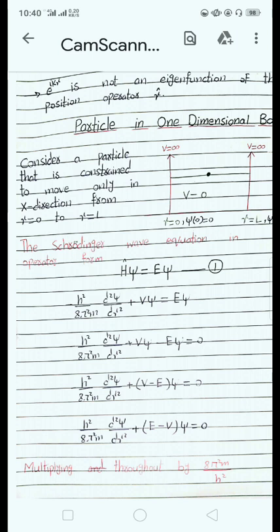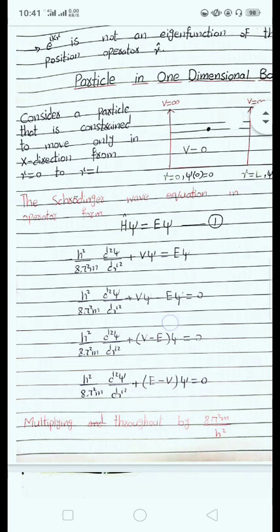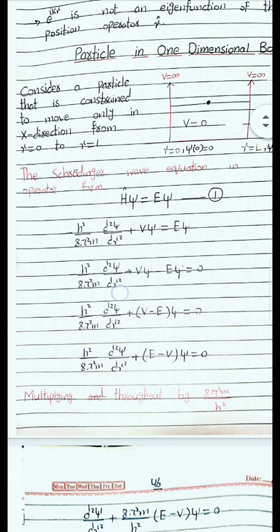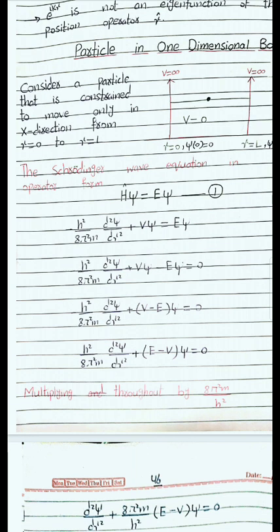Whenever we want to calculate the wave function, we need the Schrödinger wave equation, because it is the base of quantum mechanics. According to the Schrödinger wave equation, Ĥψ = Eψ. Substituting the Hamiltonian: −h²/(8π²m) · d²ψ/dx² + Vψ = Eψ.